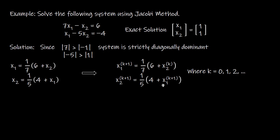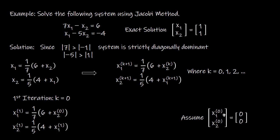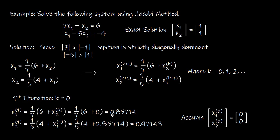On the right-hand side of the first equation we raise superscript k, and on the right-hand side of the second equation we raise superscript k+1, where k = 0, 1, 2, and so on. For the first iteration we set k = 0. To get the first approximate solution of X1, we need the initial solution of X2^(0). Taking the initial guess X2^(0) = 0, we compute the first approximate solution of X1.